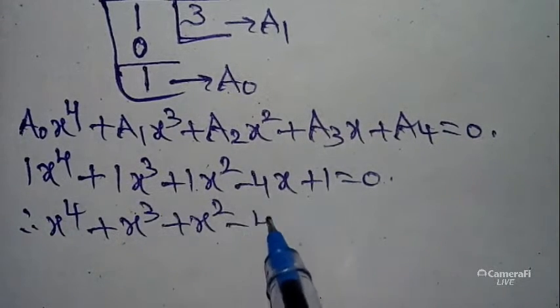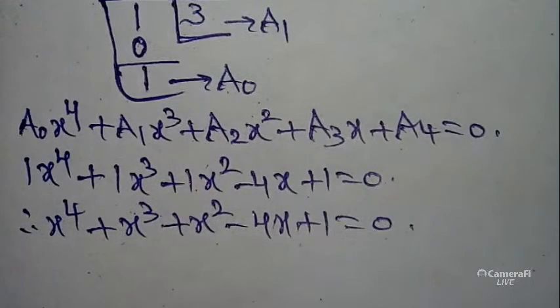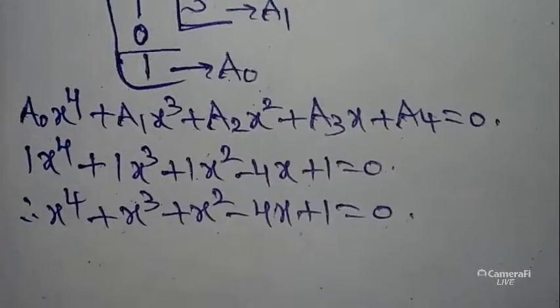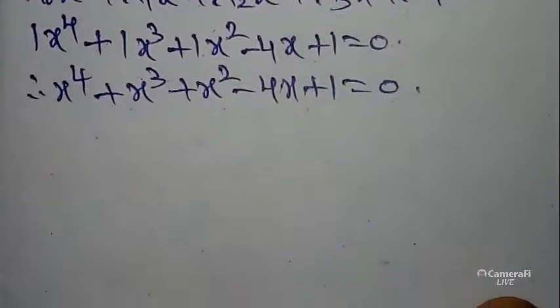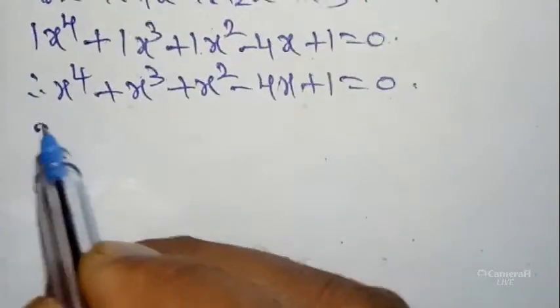...minus 4x + 1 = 0. That is our required answer.